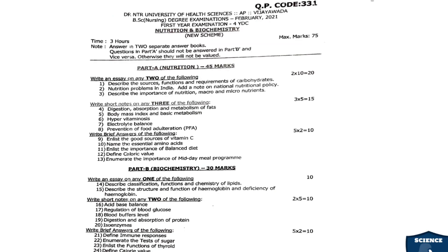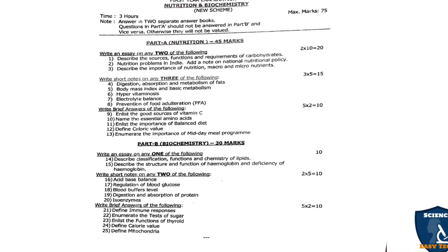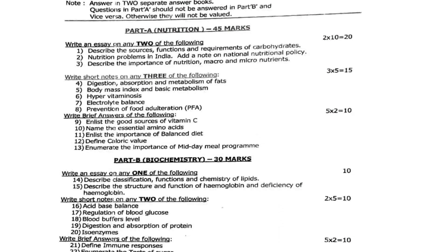Next is the February 2021 question paper. The pattern is the same, so I'll just list the questions. Essay questions: first, describe the sources, functions, and requirement of carbohydrates. Second: nutritional problems in India, add a note on national nutritional policy. Third: describe the importance of nutrition — macro and micronutrients. Short notes: fourth, digestion, absorption, and metabolism of fats. Fifth: body mass index and basal metabolism. Sixth: hypervitaminosis. Seventh: electrolyte imbalance. Eighth: prevention of food adulteration under PFA.